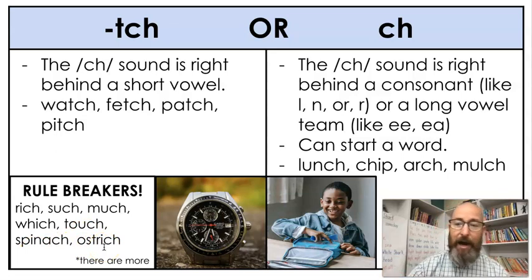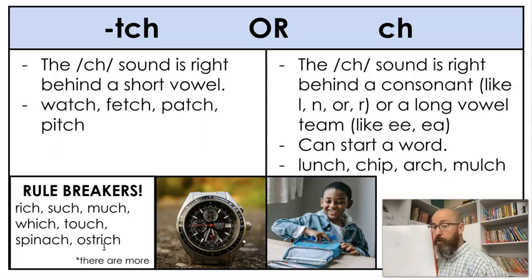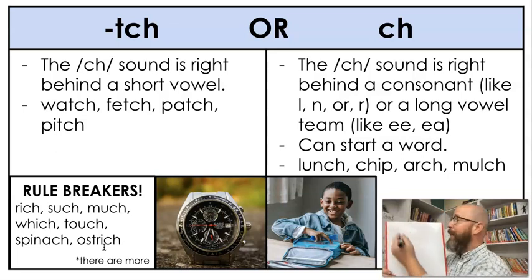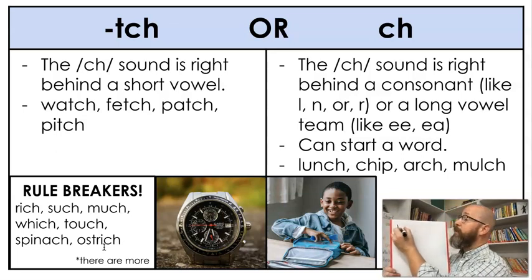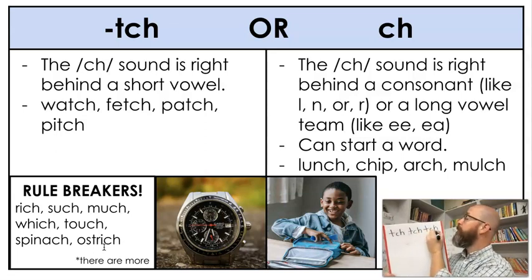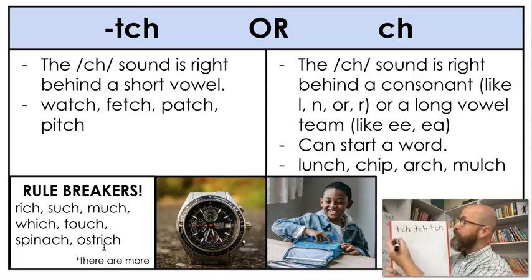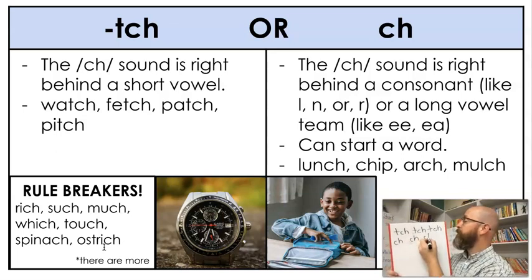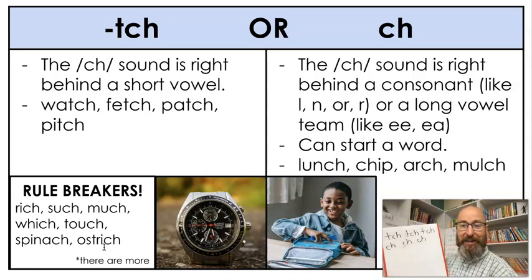Now, before we get started blending, I always want to practice writing them. So let's get out our paper and pencil, or our whiteboard and marker, whichever ones you're going to use today. Let's write the two different ways we make the ch sound. Let's start with T-C-H — write it three times and make the sound each time. Ch. Ch. Ch. Now let's do it spelled C-H. Ch. Ch. Ch. Very good, thank you for doing that with me.